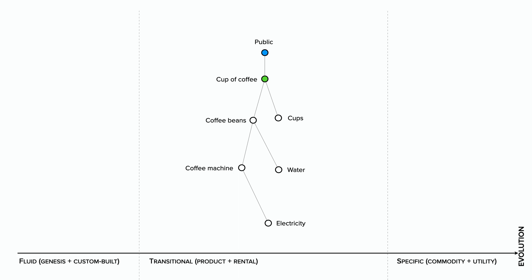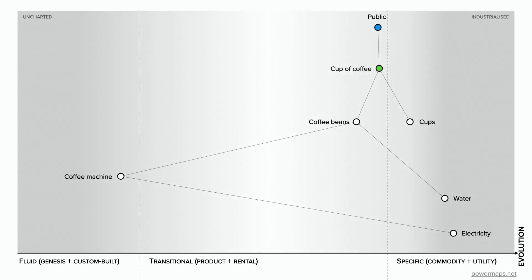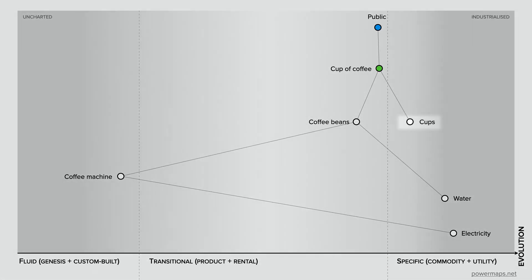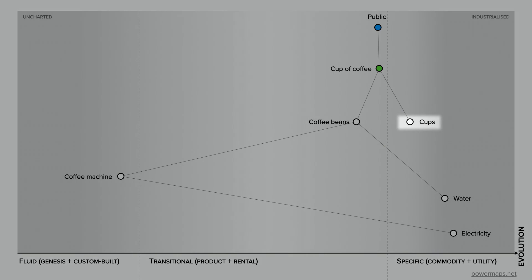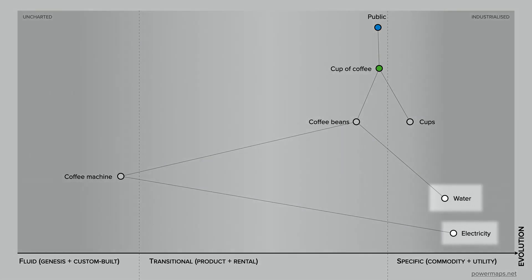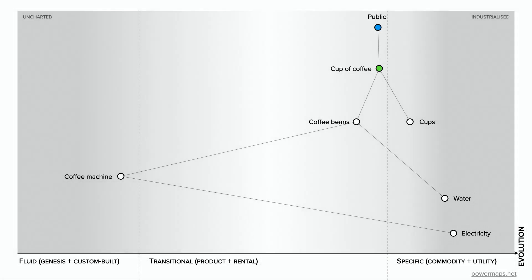First, let's apply the evolution axis to show how evolved each component is in our market. We can see that coffee beans are a mature product, meaning we'll probably have lots of suppliers we can source them from. Cups themselves are a commodity, meaning they're pretty hard to differentiate on except for price and availability. While the water and the power we need to run our coffee machine are utility services — highly reliable components where we just pay for what we use. Now this isn't a perfect map — no map is, as that would require a map that is one-to-one scale, which would render it useless.